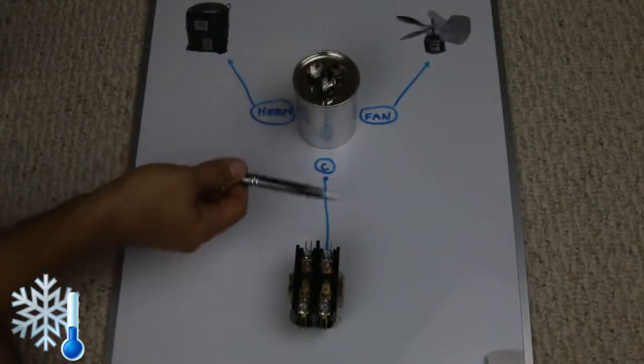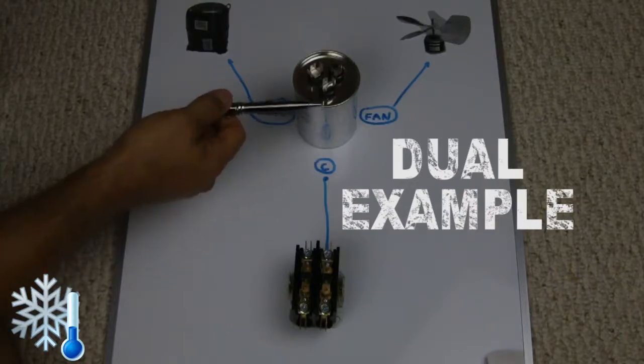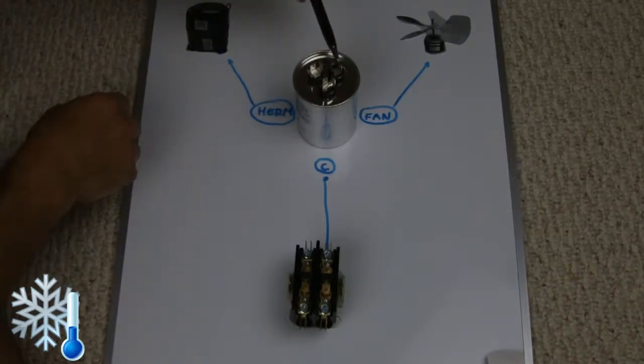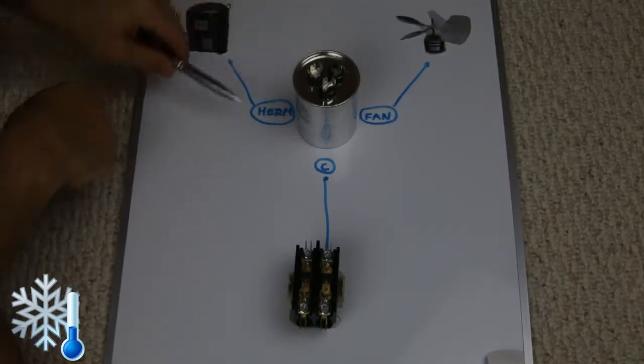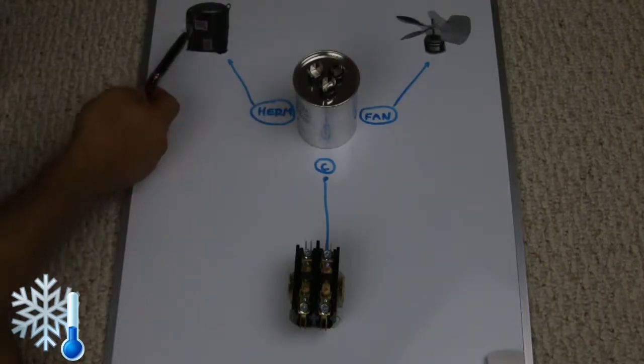The common terminal is connected to a contactor via the C terminal, and the fan is getting connected to the fan connector and the compressor is connected to the herm, hermetic compressor.